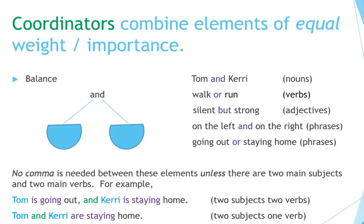No comma is needed between these elements unless there are two main subjects and two main verbs. For example: Tom is going out, and Carrie is staying home — you can see two subjects and two verbs. But 'Tom and Carrie are staying home' has two subjects and just one verb, so no comma is needed.